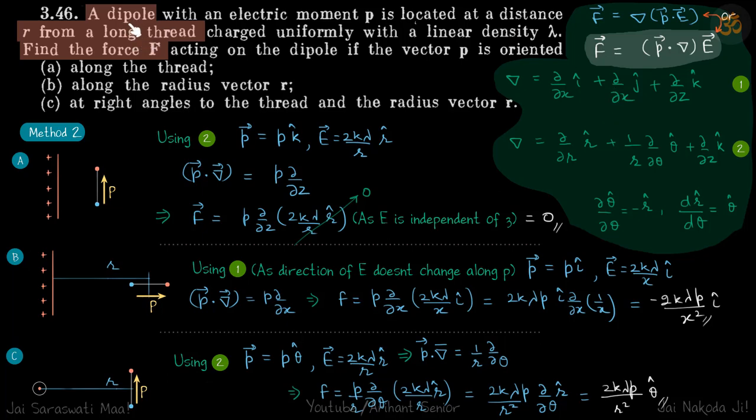So here we are going to attempt the same question 3.46 using this formula. This is force equals p dot del operated on E vector. So you have probably heard of this formula before. This is derived from this. We will not go into the derivation, it's beyond our scope. Just know that this formula is same as this formula in our conditions of electrostatic.